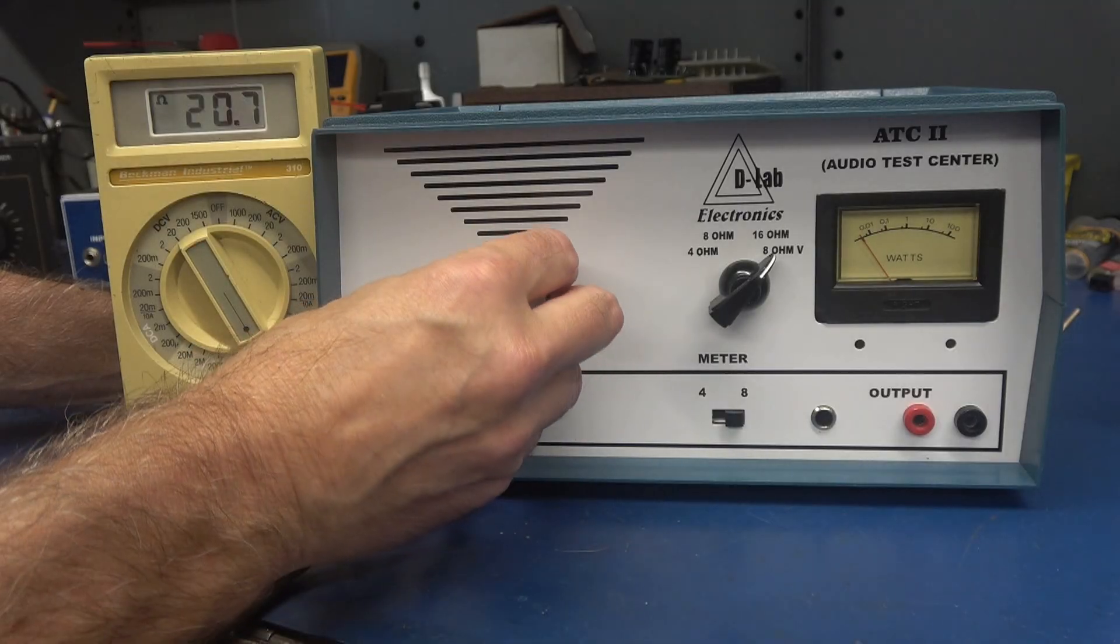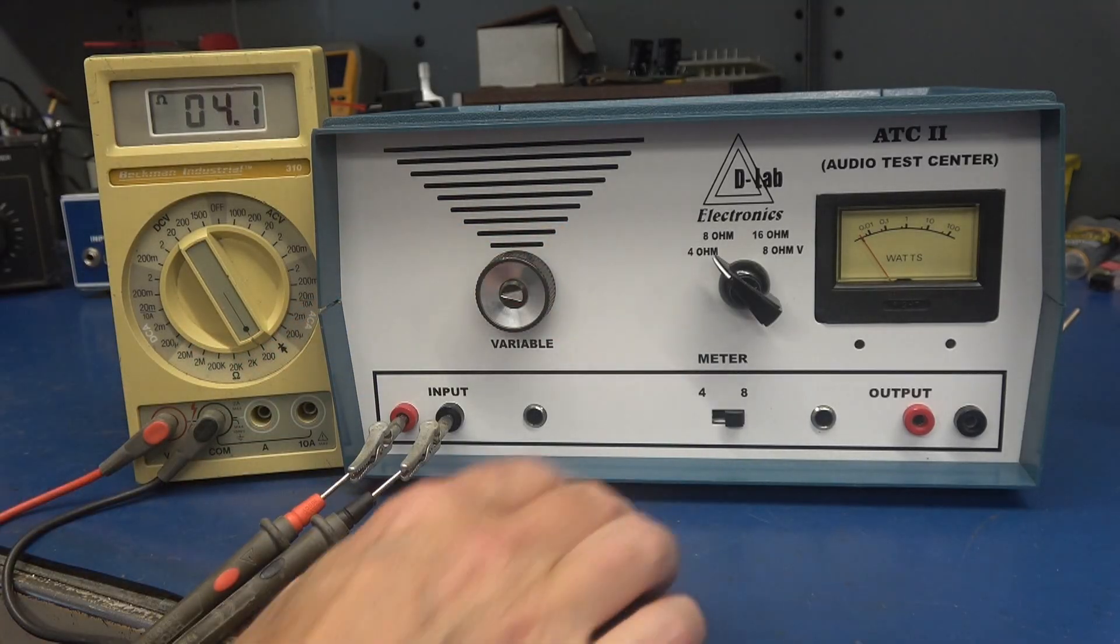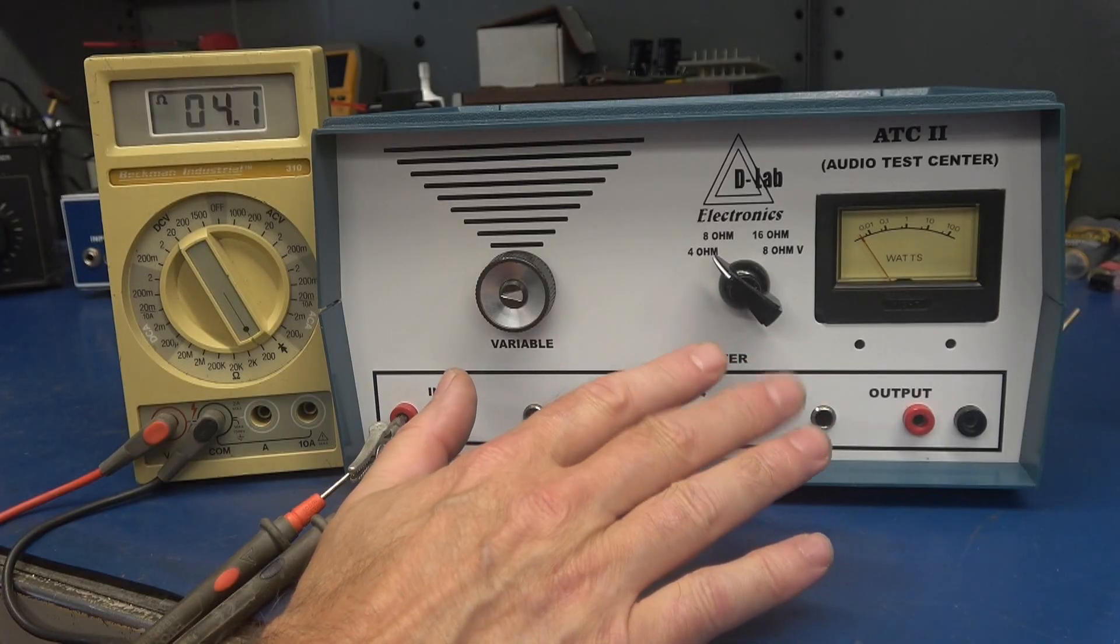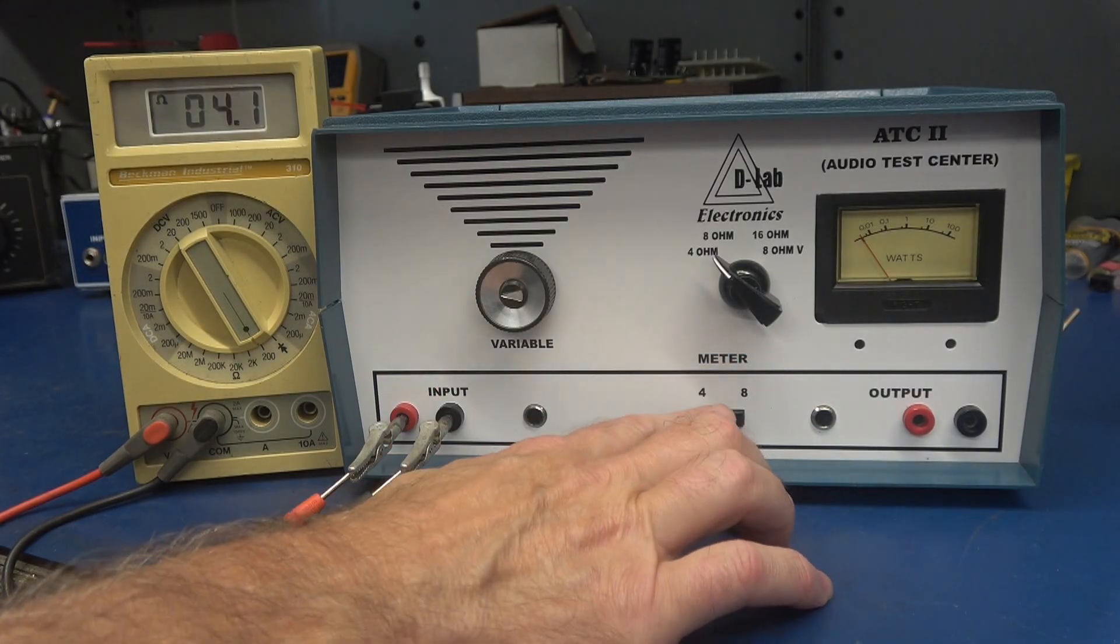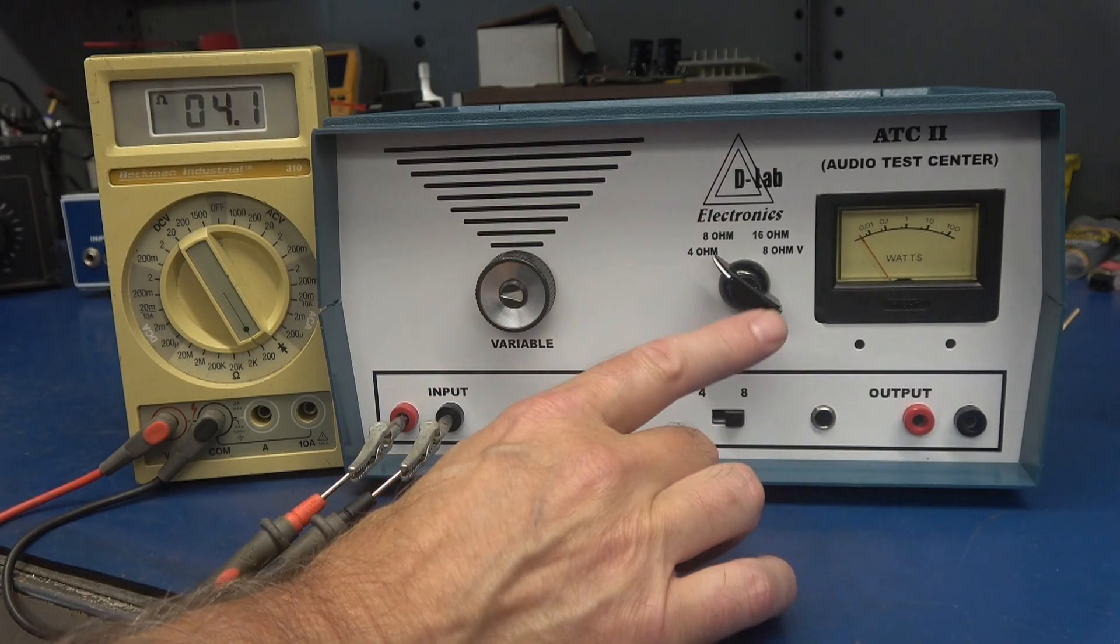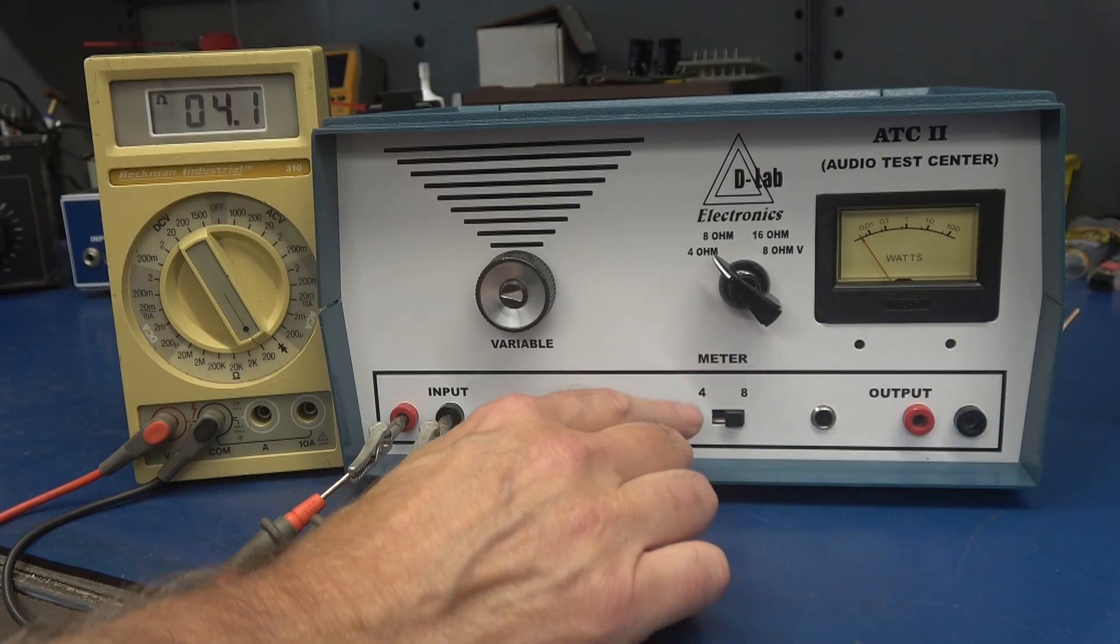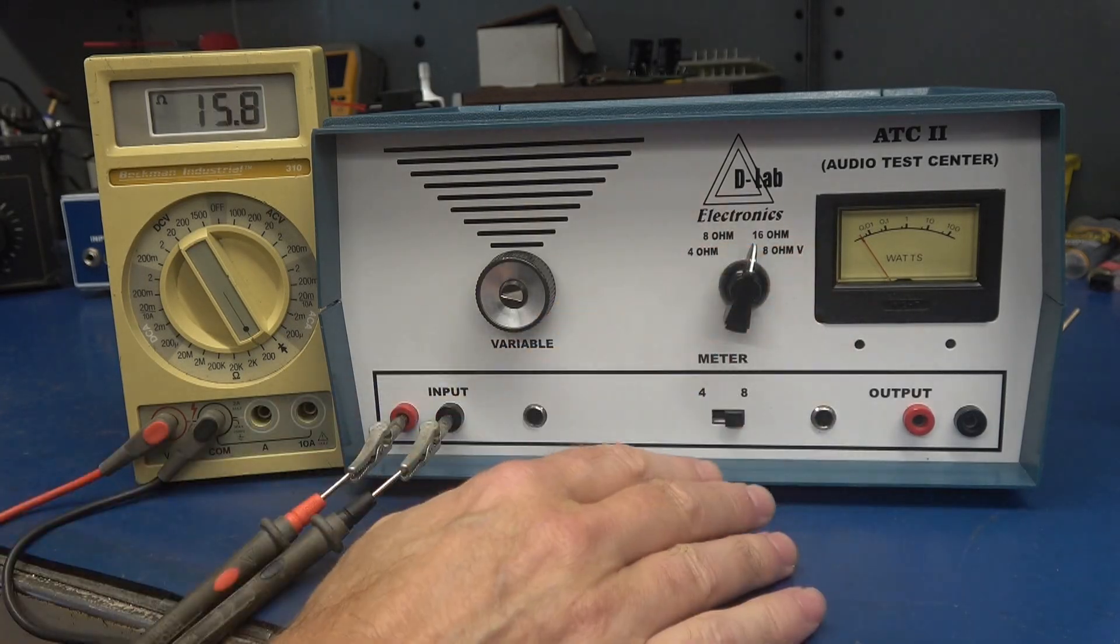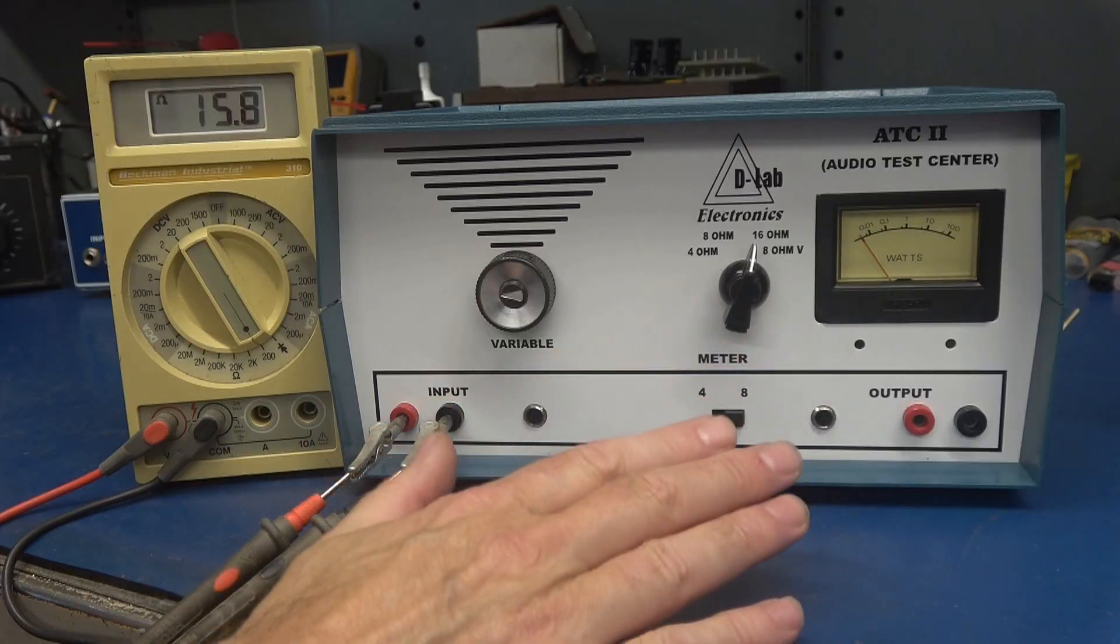This L pad in here acts as an absorber. So this is a passive type watt meter. It does not need power to operate. This switch here, four and eight, is for calibration of that meter. So I only have it for the four and eight ohm positions. 16 will still read, but it's not going to be calibrated.